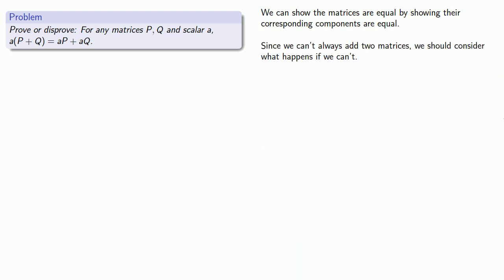Since we can't always add two matrices, we should consider what happens if we can't. If this sum aP + aQ is undefined, it is nothing. And it's true that a times (P + Q) is equal to aP + aQ because this is a statement about nothing. Or another way of looking at it is that if we can't add the two matrices, then both sides are actually undefined and so our statement is trivially true.